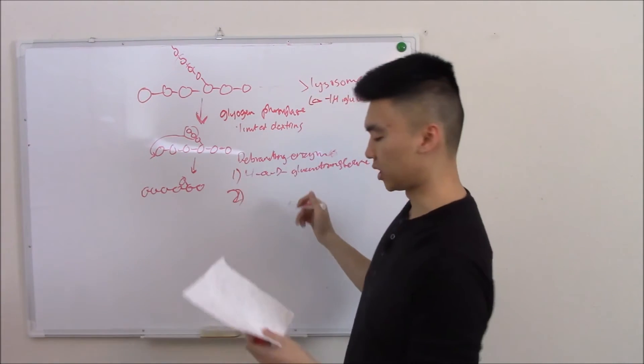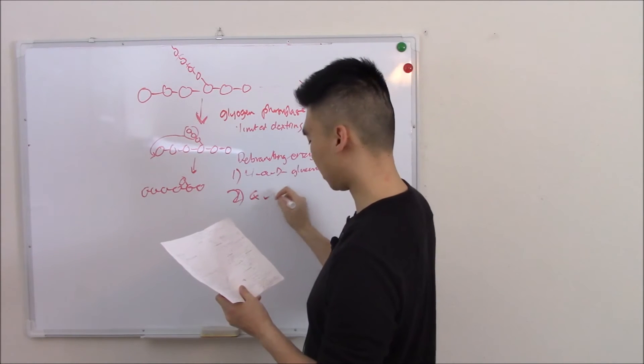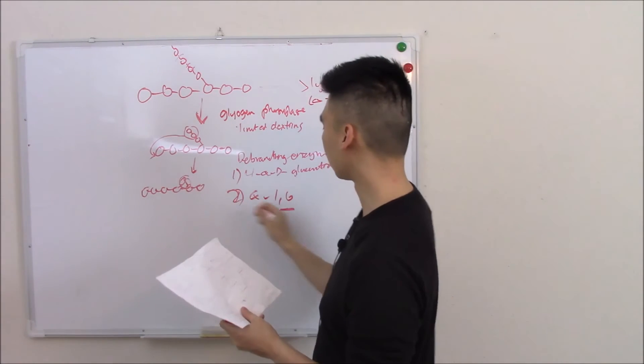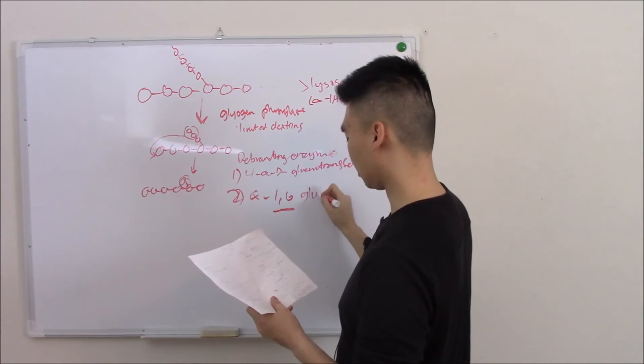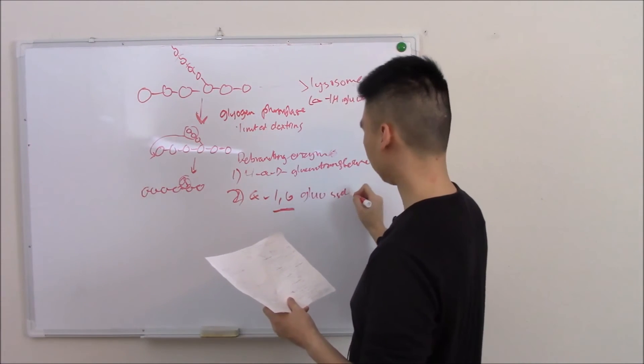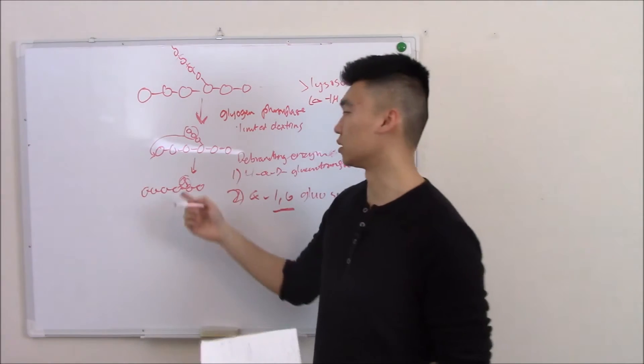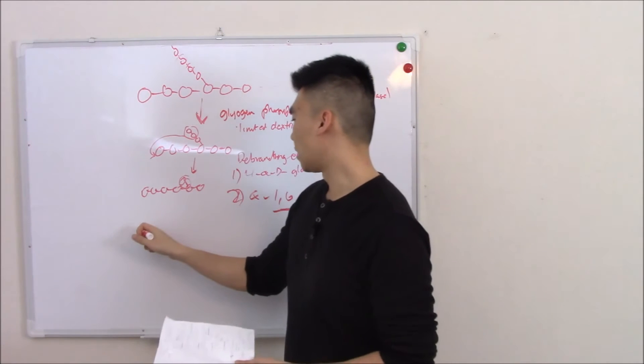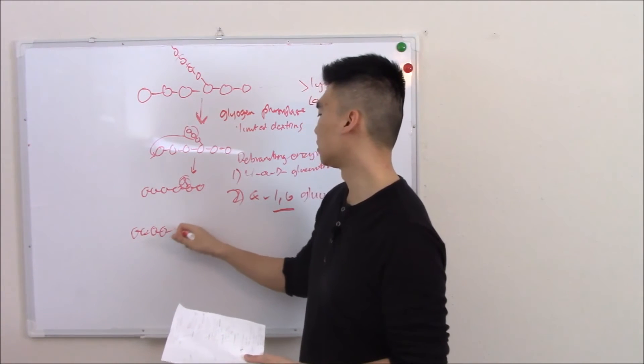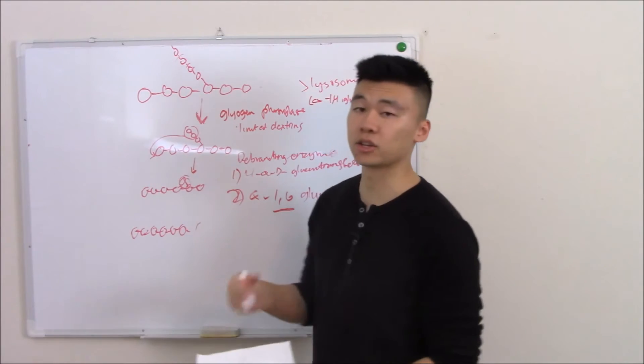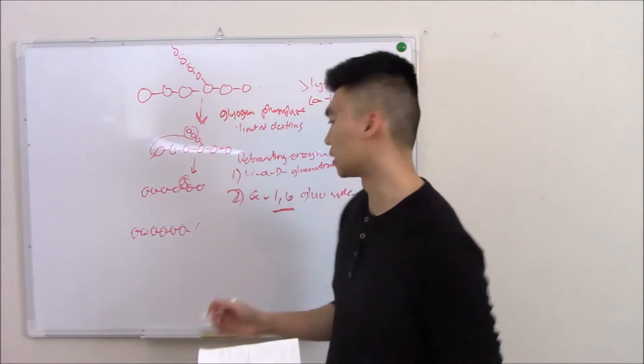And then finally, the second function of the debranching enzyme is your alpha 1-6 glucosidase, and that just cuts off that last 1-6 linkage. And now you have it - nice glucose 6-phosphate. And you know the fate of glucose 6-phosphate.